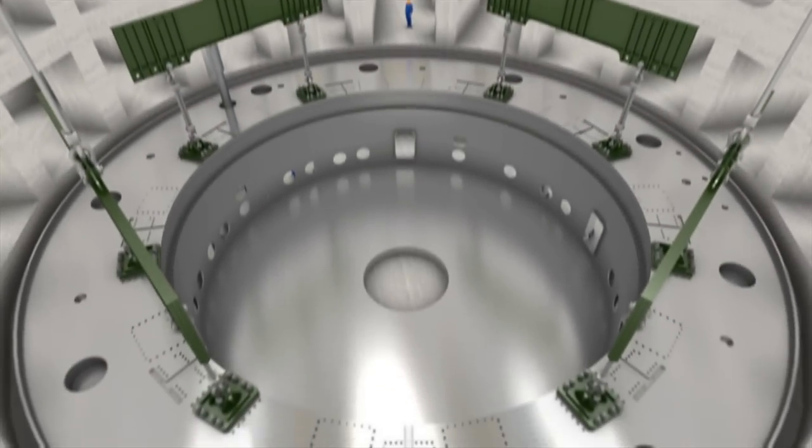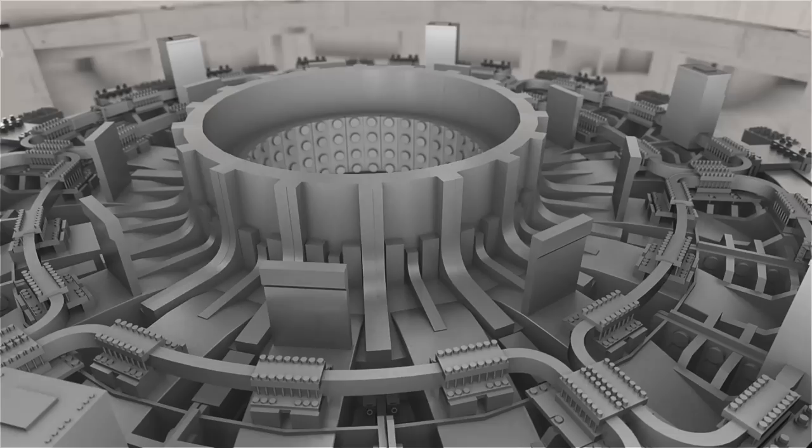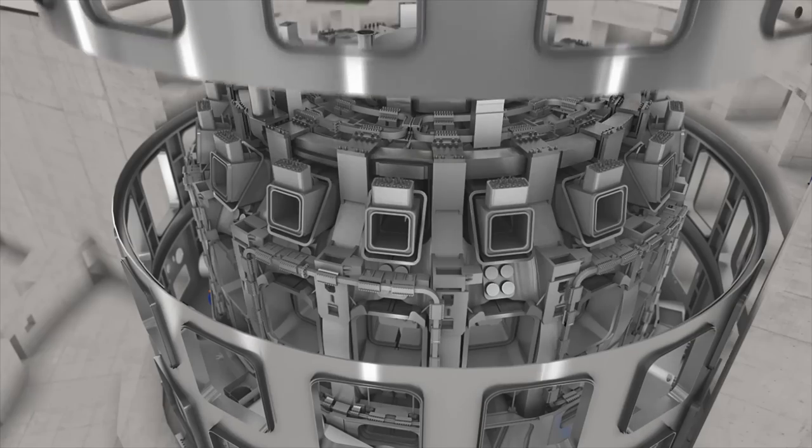The ITER assembly commences with the installation of the Cryostat base, followed by the nine 40-degree sectors of the vacuum vessel, the surrounding thermal shields, the superconducting magnets, and finally the Cryostat.